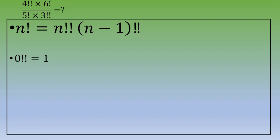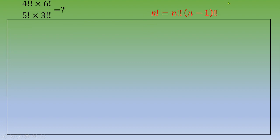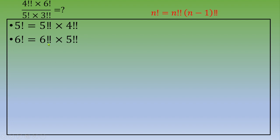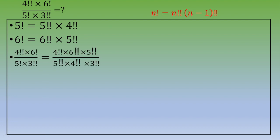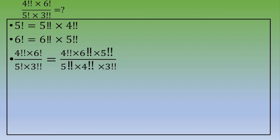Now let's solve this exercise using that formula. We rewrite 5 factorial as 5 double factorial times 4 double factorial, and 6 factorial as 6 double factorial times 5 double factorial. Plugging these into the expression gives: 4 double factorial times 6 double factorial times 5 double factorial, over 5 double factorial times 4 double factorial times 3 double factorial.